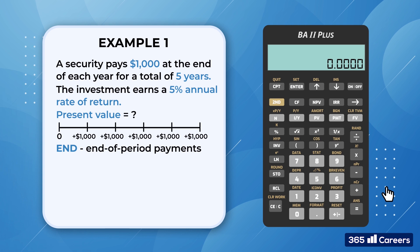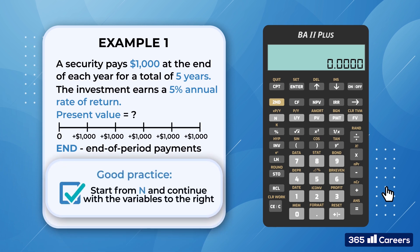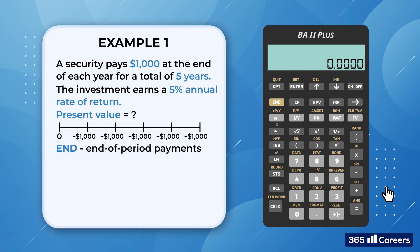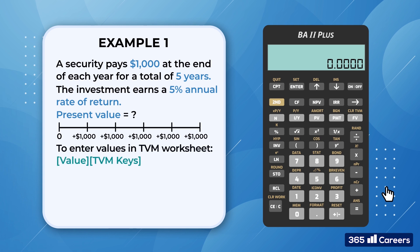When you solve TVM problems, it's always a good practice to start from N, the number of periods, and then continue with the rest of the variables to the right. This method guarantees that you will not forget any of the terms needed as an input. You just enter a value followed by the variable you would like to use. For the problem at hand, we have an investment period of 5 years, so N equals 5. We press 5 and then N.